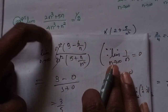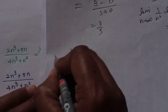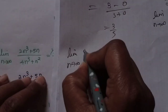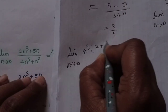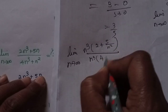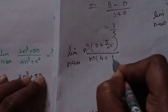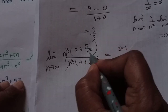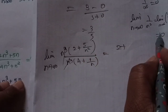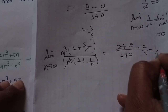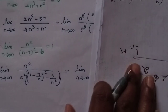Here the higher degree term is n³. Divide numerator and denominator by n³. Limit n tends to infinity of (2 plus n³) divided by (5n² plus 4n³): dividing by n³ gives (2/n³ plus 1) divided by (5/n plus 4). n³ cancels. Applying the limit: 2/n³ tends to 0, 5/n tends to 0. So we get (0 plus 1) divided by (0 plus 4) — wait, that gives 2 by 4 which is 1 by 2. The answer is 1 by 2.